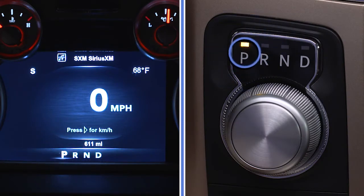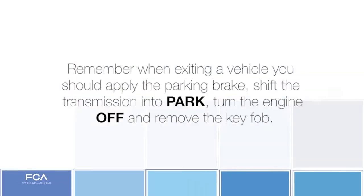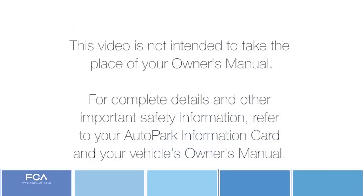In general, always look for the P in your instrument cluster display and near your rotary shifter to make sure your vehicle is in park before you exit. Remember, when exiting a vehicle you should apply the parking brake, shift the transmission into park, turn the engine off, and remove the key fob. This video is not intended to take the place of your owner's manual. For complete details and other important safety information, refer to your auto park information card and your vehicle's owner's manual.